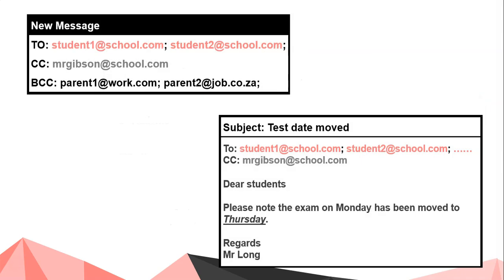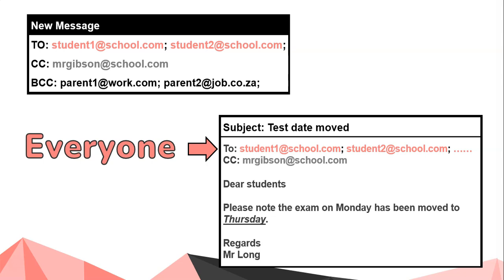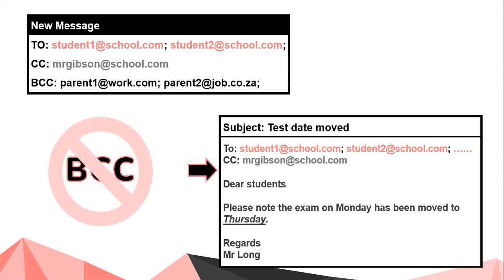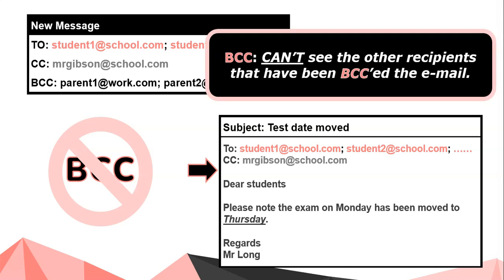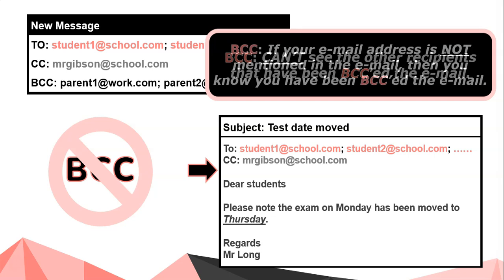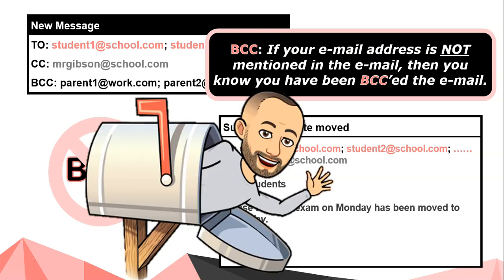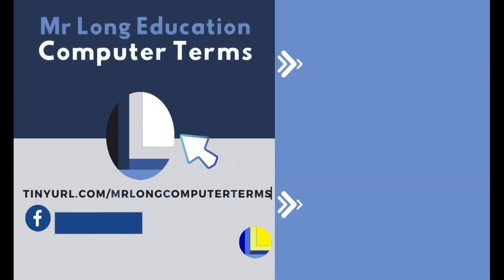This is what the email looks like when it arrives. Everyone can see that this email was sent to the students, and everyone can see that Mr. Gibson has been informed as well. However, there is no BCC section visible, which means no one can see who was in the Blind Carbon Copy section. If you don't see your email address in the To or CC section, you know you were included in the BCC section.